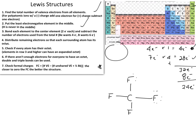Distributing six electrons to each of the four fluorines: 6 × 4 = 24 electrons. Twenty-four minus 24 gives zero electrons remaining. Steps three and four are now complete, and we move on to step five to verify that everyone has their octet.